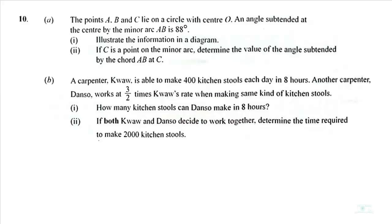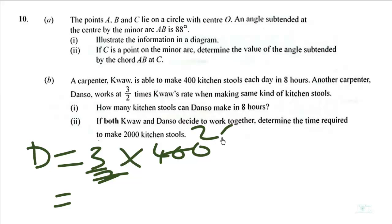So Danso can make 3 over 2 times of Kuo. 2 goes here 200 times, which is 600.